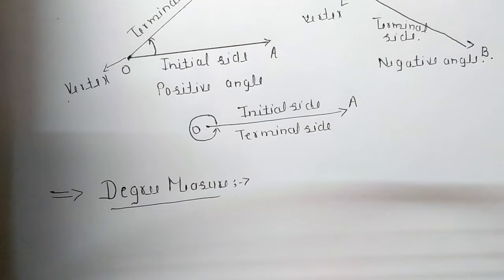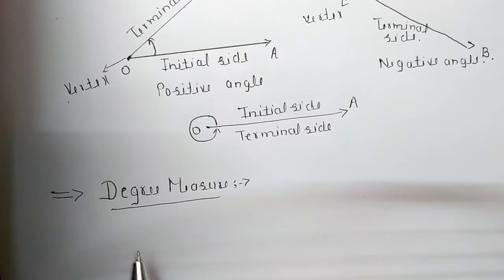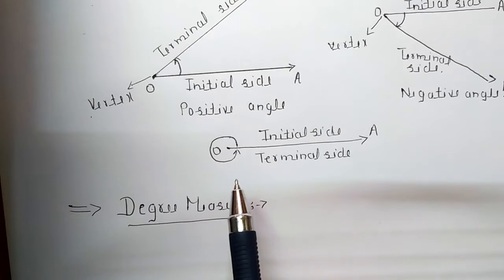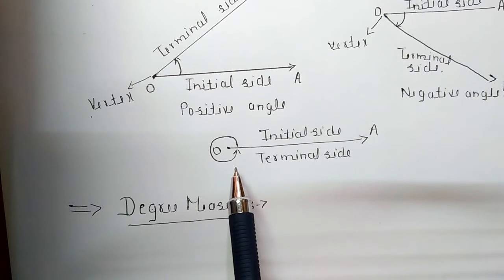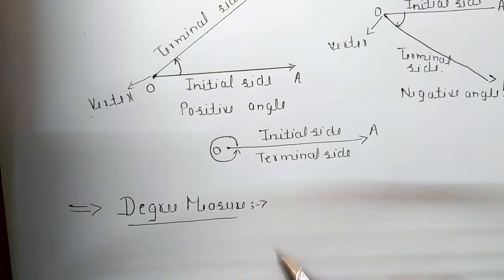Now we shall describe two units of measurement of an angle which are most commonly used: degree measure and radian measure. Starting with degree measure — if a rotation from the initial side to the terminal side is 1 over 360 of a revolution, the angle is said to have a measure of one degree.